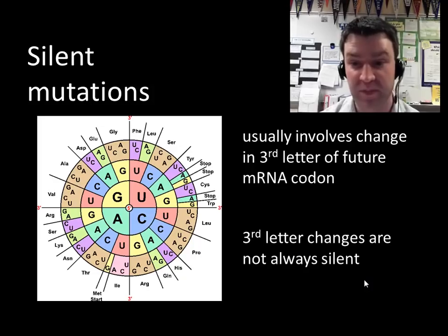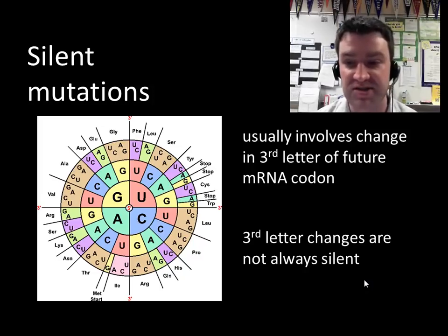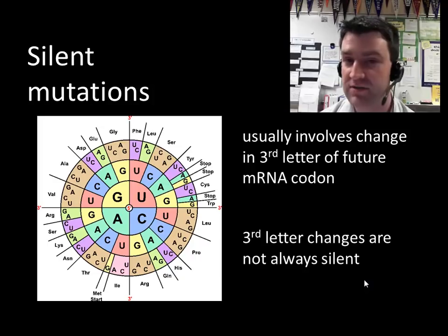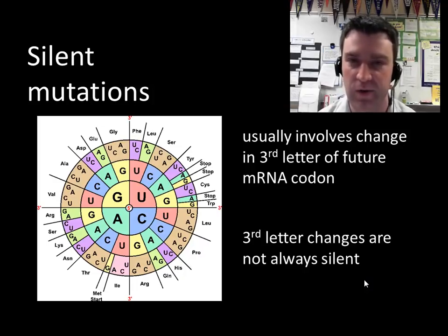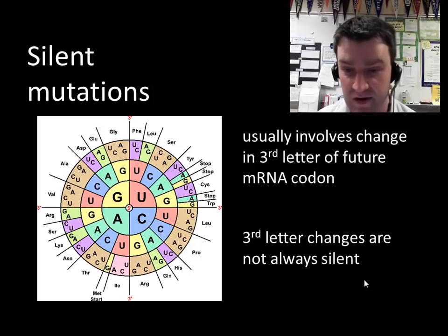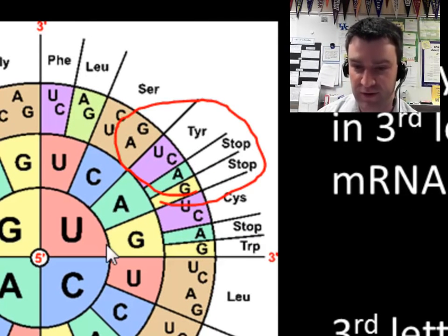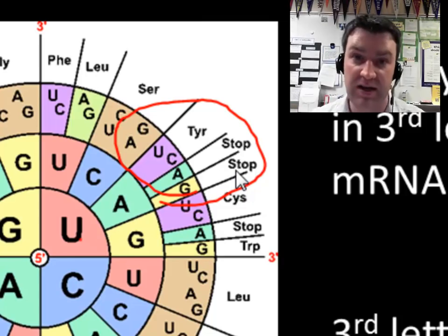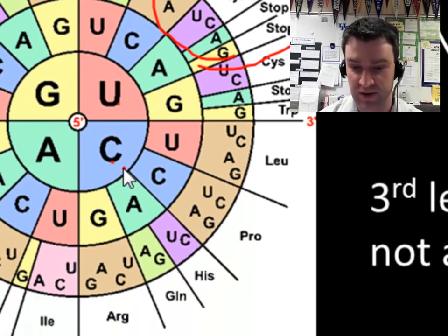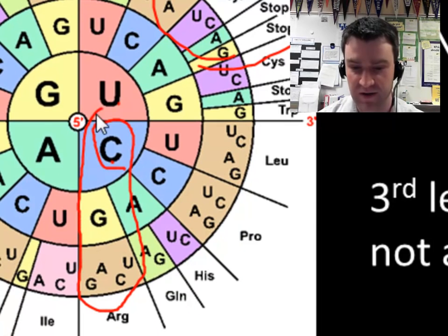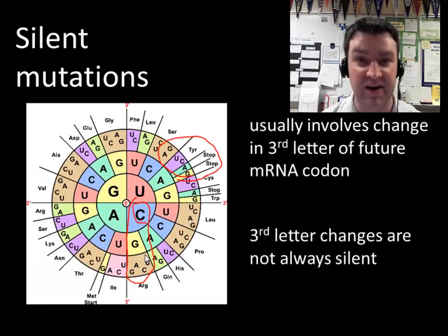Phenotype will not be affected at all. Silent mutations usually involve a change in the third letter of a codon, although third-letter changes may not always be silent. For example, UAU and UAG code for very different things. But in other parts of the codon chart — like the arginine group, which is CG — it really doesn't matter what the third letter is.